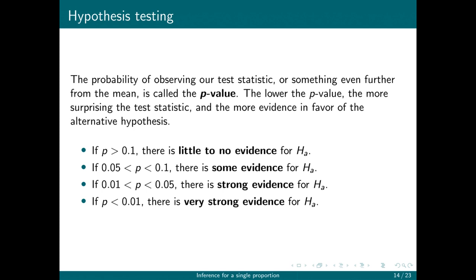Finally, the probability of observing our test statistic or something even further away from the mean of our distribution is called the p-value. It's a probability, so the lower the p-value, the more surprising the test statistic and the more evidence in favor of the alternative hypothesis.